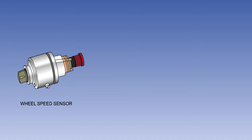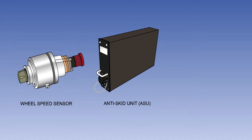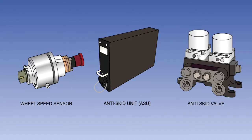An electronic anti-skid system comprises three main elements: a sensor, which measures wheel speed; a control box, known as an anti-skid unit, or ASU, to compute wheel speed information; and a servo valve, or anti-skid valve, to modulate brake pressure.